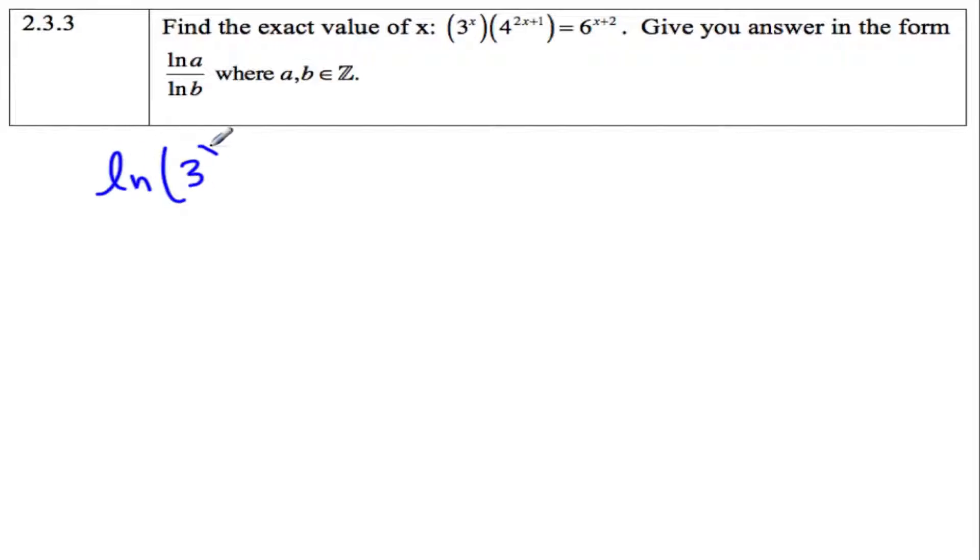So ln of 3^x times 4^(2x+1) equals ln of 6^(x+2). I'm going to break this piece up, so I have ln of 3^x plus ln 4^(2x+1) equals the same thing again.